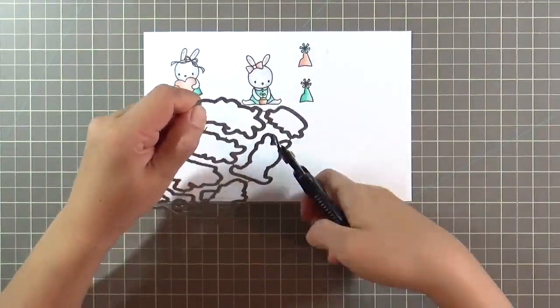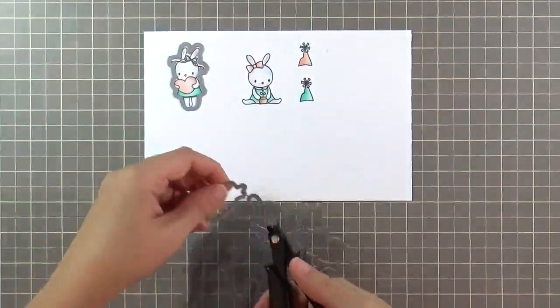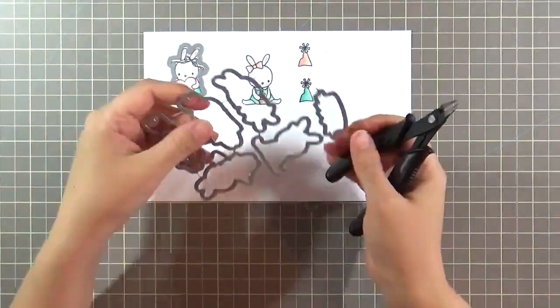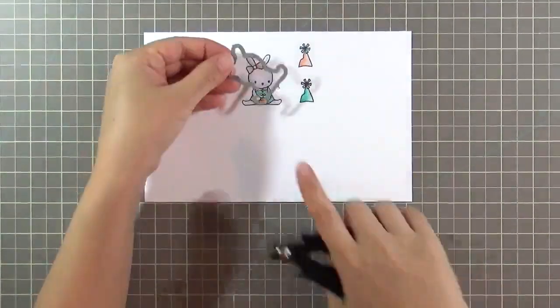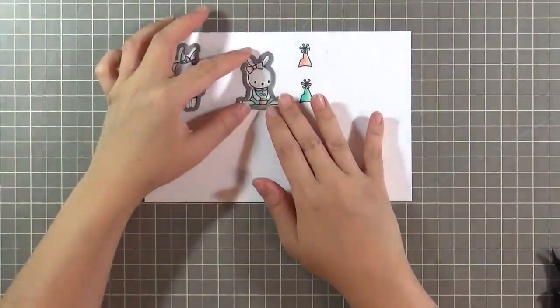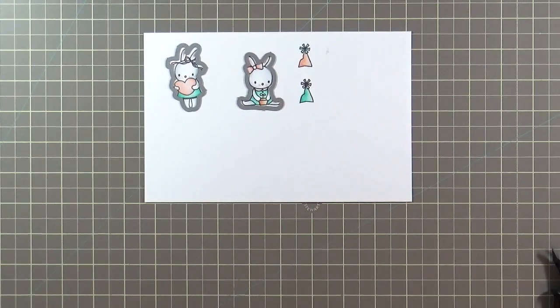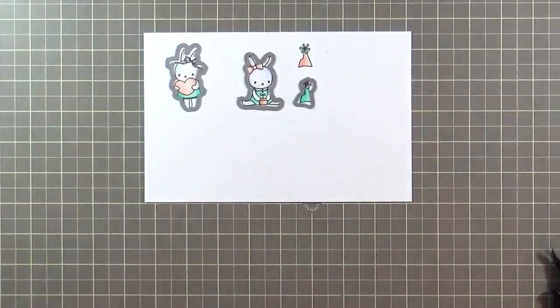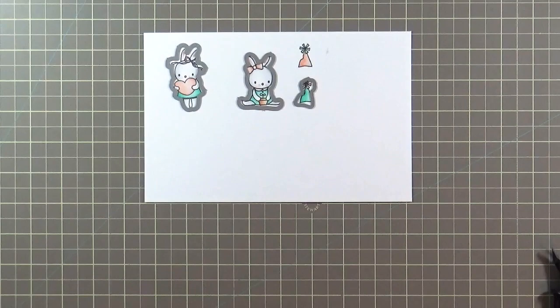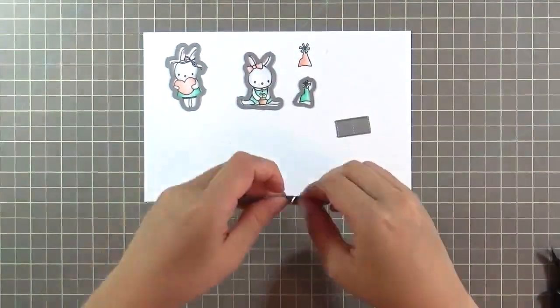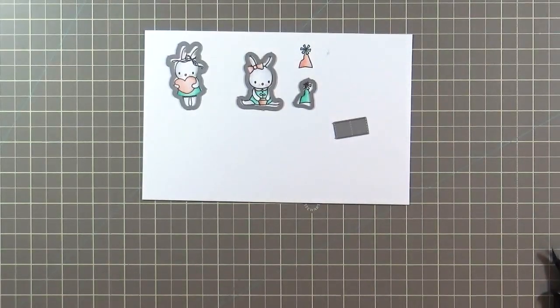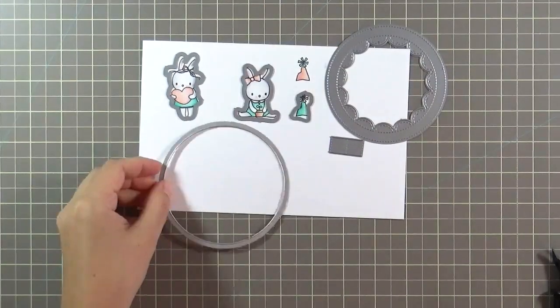Now that the coloring is done, I'm taking the coordinating dies and I'm just picking out the ones that match the two rabbits that I cut. I'll cut the rest of these out later. And I'm also taking the hat die from the Ella and Friends stamp set that I will use to cut out the party hats. I like to do all my die cutting at the same time. So right now I'm just ripping out the pop-up trio.